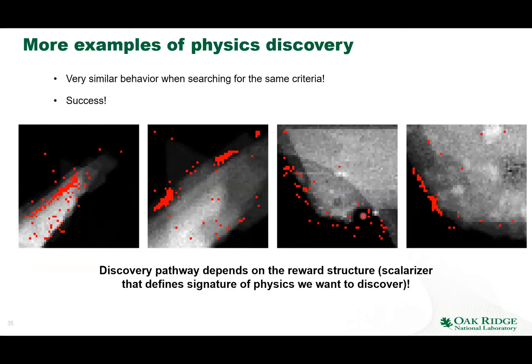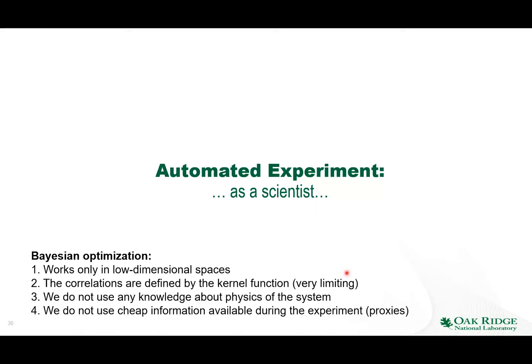A very important statement: the discovery pathway — the sequence in which the microscope takes measurements — is really dependent on the reward structure. We need to tell the microscope what we are looking for. When you run any kind of automated experiment in chemical spaces for materials discovery, the reward becomes even more important. The experiment will take a totally different direction depending on what you tell the system to explore.